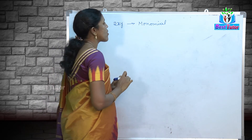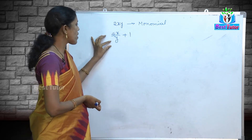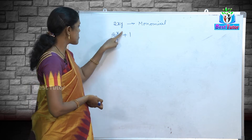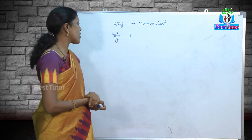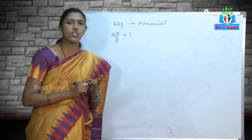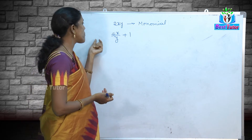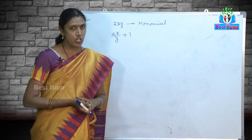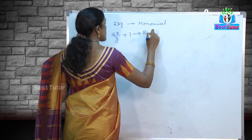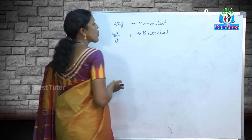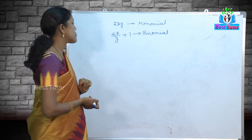What about 4x/y + 1? Is 4x/y a term? It is nothing but 4 into x divided by y, so we have combined 4, x, and y using multiplication and division — so this is a term. And 1 is a numerical term. We have combined 2 terms using addition, so it is an expression. How many terms are there? 2 terms. So I call it a binomial. A monomial is an algebraic expression which contains only one term; a binomial is an algebraic expression which consists of 2 terms.